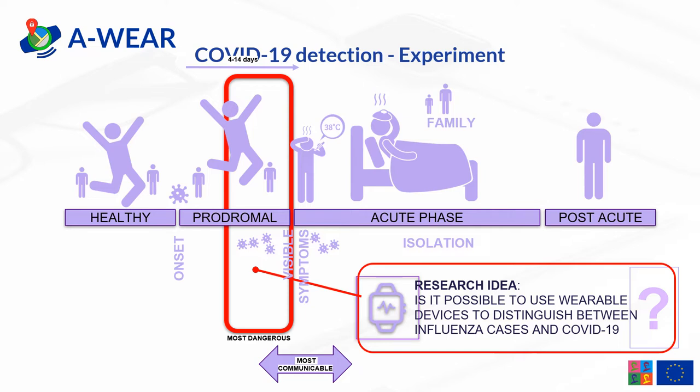On the time arrow you can see the healthy stage, the prodromal, the acute phase, and the post-case. The start of the development of the disease actually begins two days before visible symptoms appear. So it is really important to detect COVID-19 even before the visible symptoms. The research question is: is it possible to use wearable devices to distinguish between influenza cases and COVID-19? This would protect society and limit the spreading of the disease.